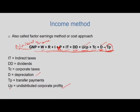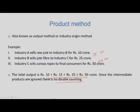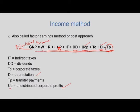Undistributed corporate profits, commonly referred to as retained earnings, are corporate profits that are neither paid as corporate profit taxes nor paid to shareholders as dividends. Undistributed corporate profits are important for the derivation of personal income from national income. What we have looked at so far is the product method and the income method of national income estimation.